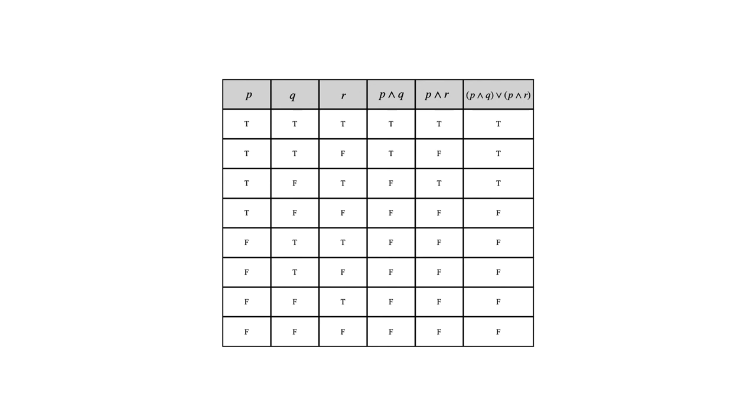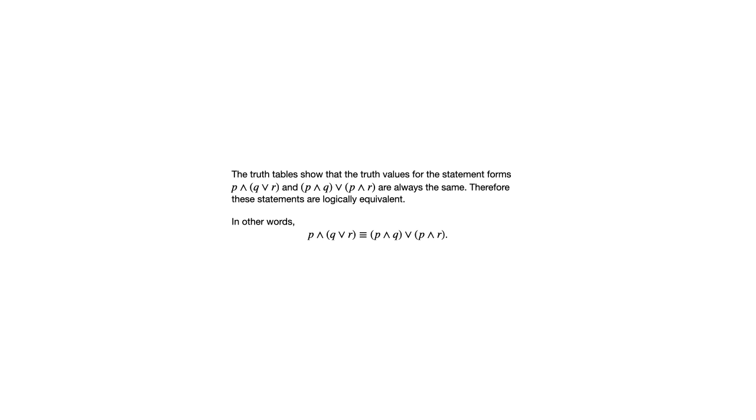We're seeing the same truth values in each statement form. So our conclusion is that the truth tables show the truth values for the statement forms are always the same. Therefore, these statements are logically equivalent. Using the notation introduced in the previous video, we can write each statement form with an equivalence symbol — almost like an equal sign with three bars — which is the notation for logical equivalence. I hope you found this video helpful as you go through the homework for this section.